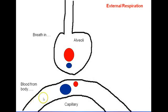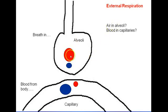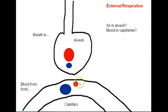Here comes the blood from the right side of the heart, from the body, and you have the air from the alveoli. The air in the alveoli is high partial pressure of oxygen and low partial pressure of CO2, while the blood in the capillaries has a high partial pressure of CO2 and a low partial pressure of oxygen.